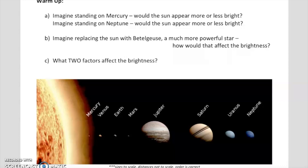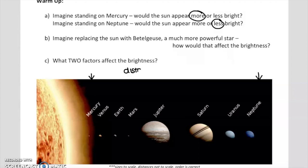For part A, if you imagine that you are standing on Mercury — Mercury is very close to the Sun — you should have guessed that the Sun would appear brighter if you were standing on Mercury. However, if you were on Neptune, which is quite far away from the Sun, it would be much less bright in Neptune's sky. So the distance you are away from the source definitely affects the brightness.